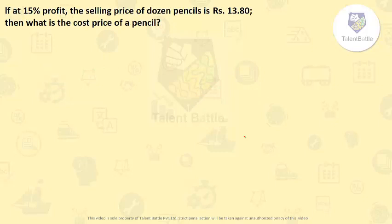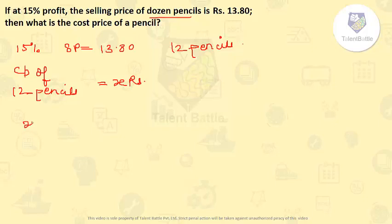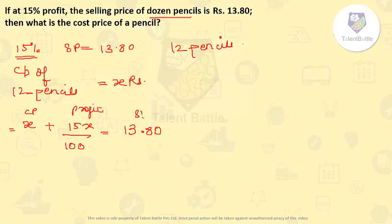If at 15 percent profit the selling price of a dozen pencils is rupees 13.80, what is the cost price of one pencil? A dozen means 12 pencils. Let the cost price of 12 pencils be x rupees. Then cost price x plus 15 percent profit, which is 15x upon 100, equals the selling price of 13.80.